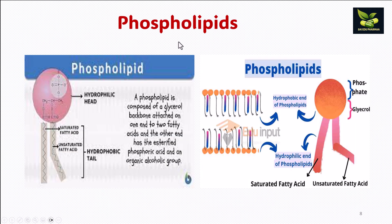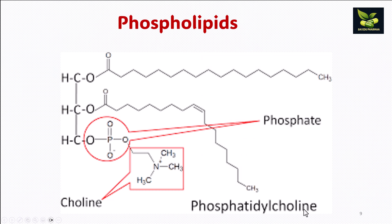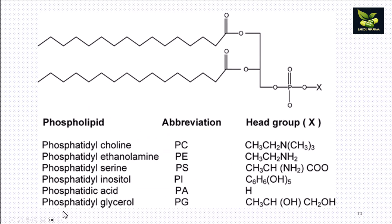Phospholipid is composed of a glycerol backbone attached on one end to two fatty acids, and the other end has esterified phosphoric acid and an organic alcoholic group. Examples of phospholipids include phosphatidylcholine — also called lecithin — egg phosphatidylcholine, phosphatidylethanolamine, phosphatidylserine, phosphatidylinositol, phosphatidic acid, and phosphatidylglycerol. By changing the head group, the composition or nature of the phospholipid can be altered.